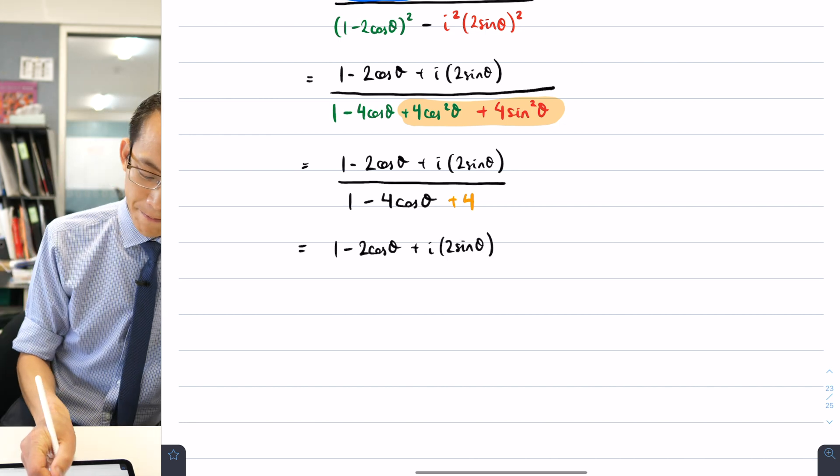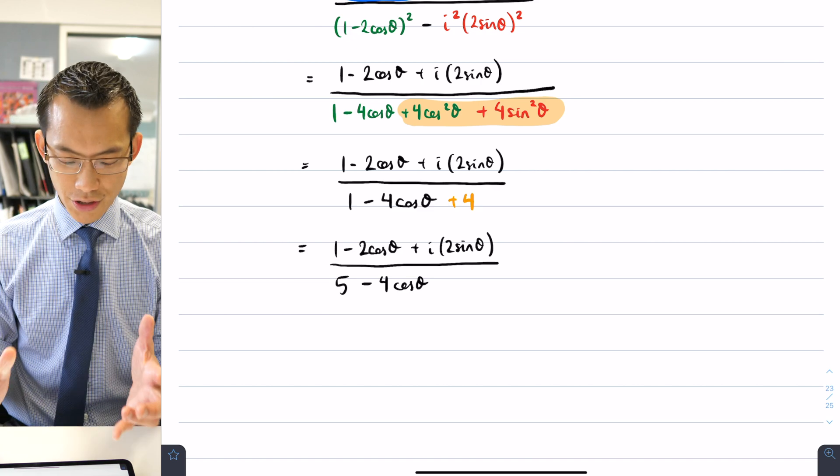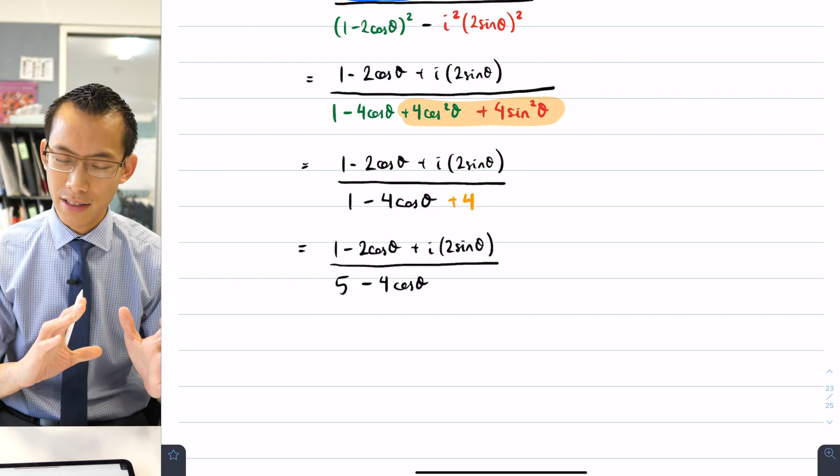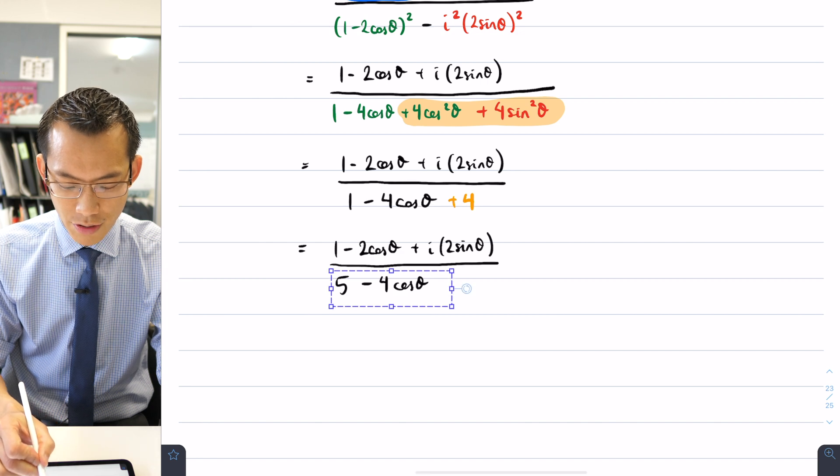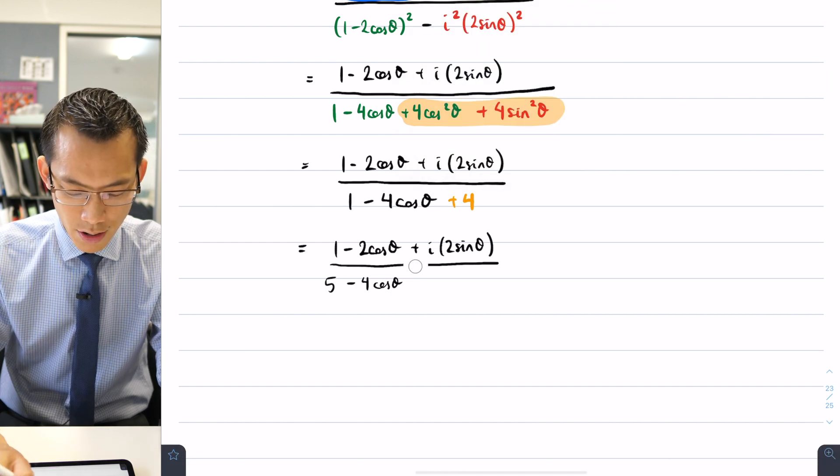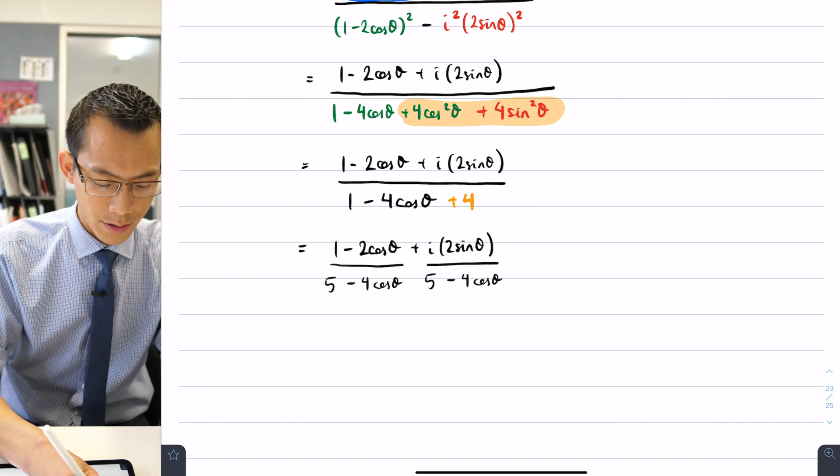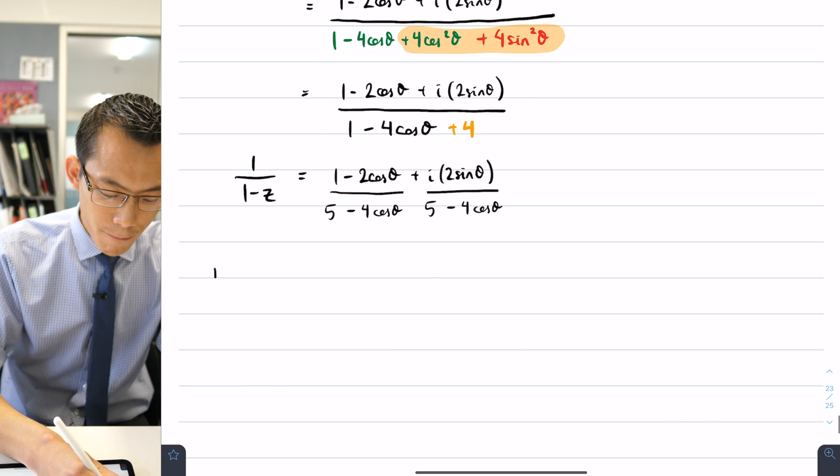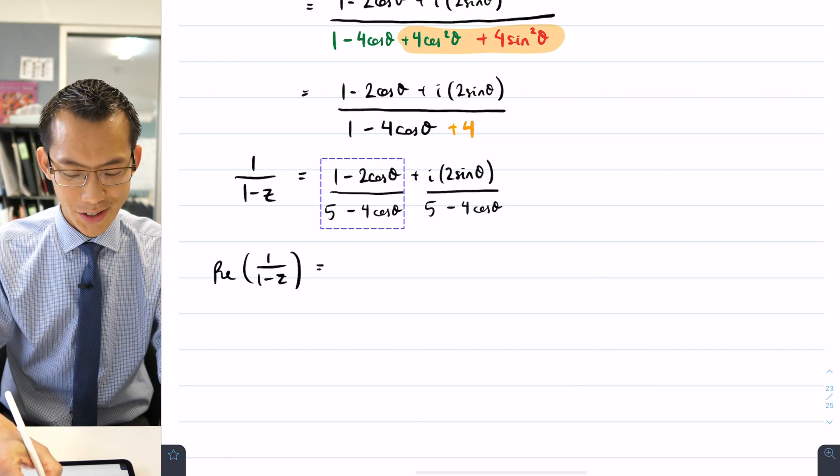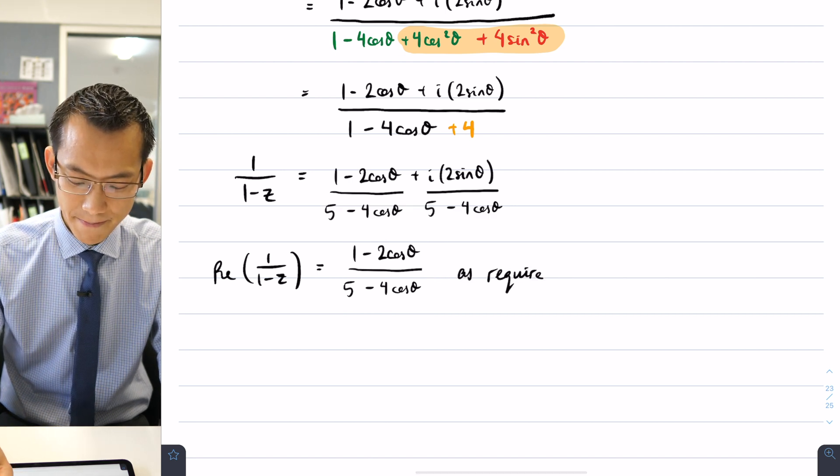Here comes the rest of the numerator, which hasn't changed for some time, divided by 5 - 4cos θ. Because this is a prove question and you want to make sure the logic is as clear as possible, I can demonstrate that this one big awful fraction can be separated out into two separate fractions: here is the real part over here on the left, and then here is the imaginary part over here on the right. They share the same denominator, so the real part of 1/(1 - z) is just going to be this term here on the left, which is exactly what I started with. So I get to conclude with 'as required.'